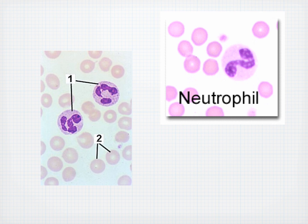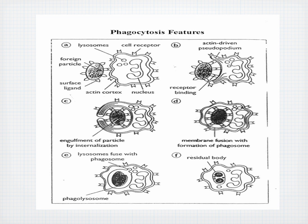There's a picture of a neutrophil and the features of phagocytosis. We can see lysosomes, a cell receptor, the nucleus, a surface ligand, and a foreign particle. The cell is opening up and swallowing the foreign particle — that's phagocytosis.